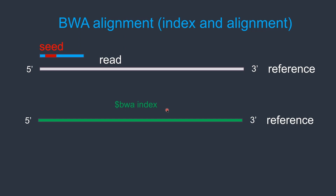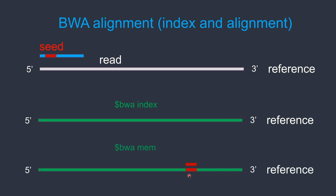FM index is a compressed suffix array used for efficient substring searches within the reference sequence. It allows BWA to quickly locate matches for parts of the reads in the reference genome. After indexing, we can align the reads using BWA MEM. The BWA MEM command performs seed-based alignment, where parts of the read are called seeds.